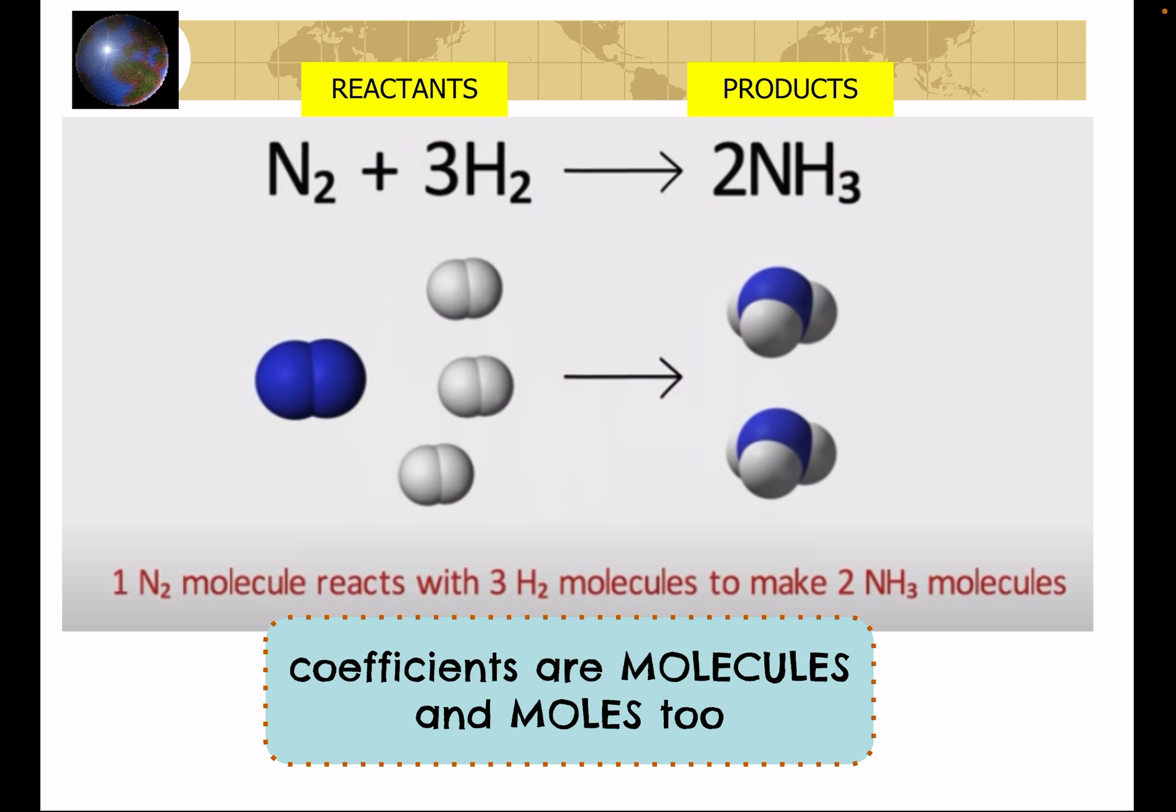On the other side, on the product side, you notice I have two separate molecules of N and three H's, NH3. This is a translation of what the equation looks like when you count up the atoms and write them in their molecule groups.